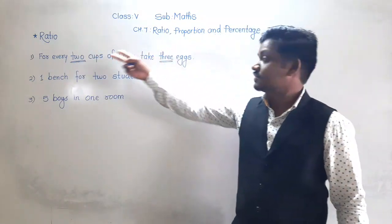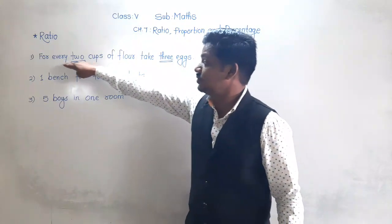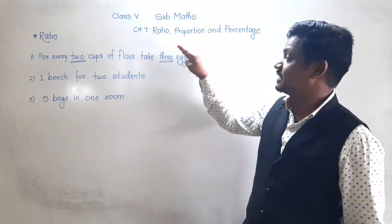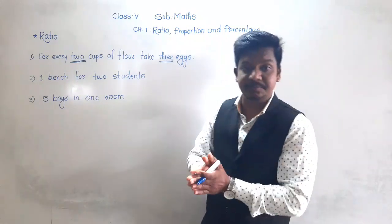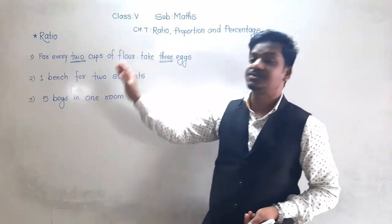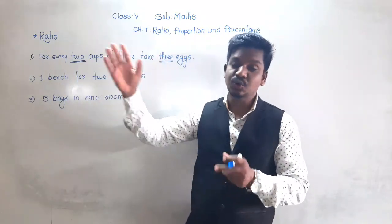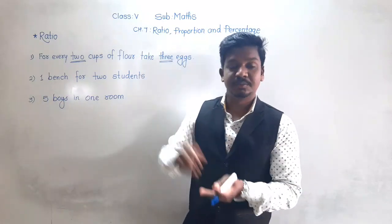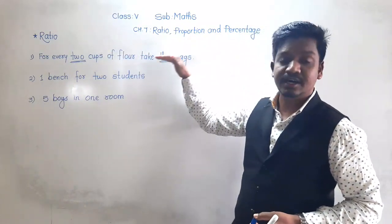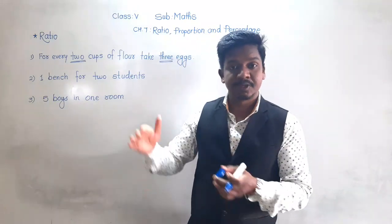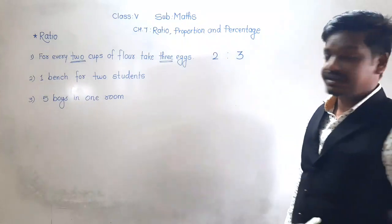So according to that it will increase. Whenever you see a recipe video, that chef tells you for every 2 cups of flour take 3 eggs. That doesn't mean you will take only 2 cups and 3 eggs - you will take according to the number of persons you are making it for. So this 2 cups of flour and 3 eggs is the basic proportion, the basic requirement.